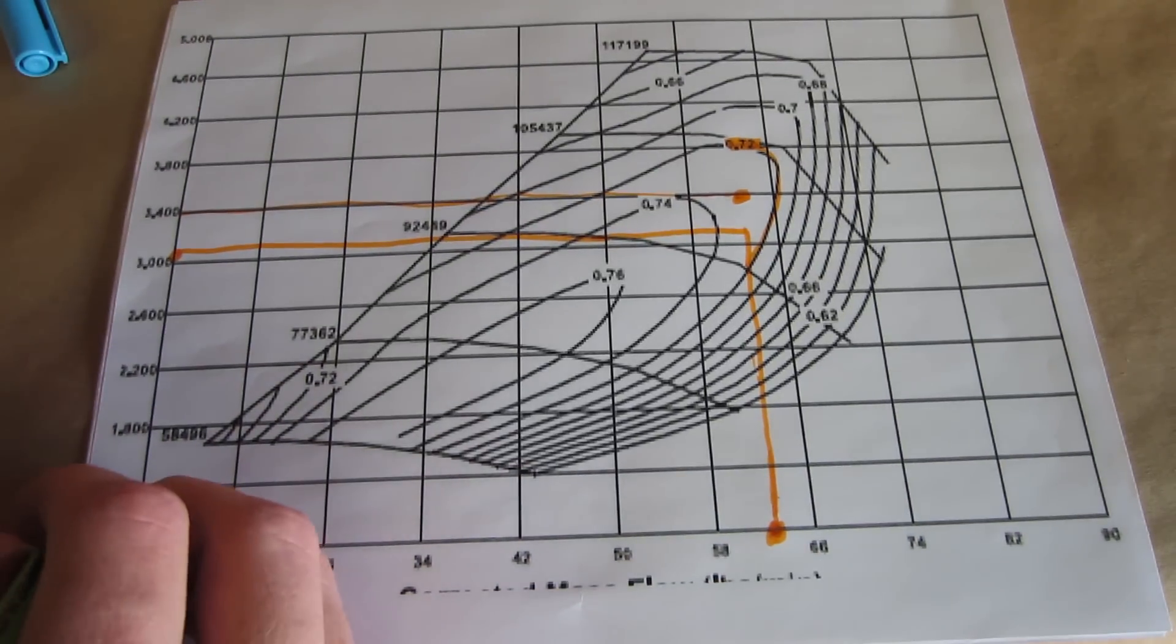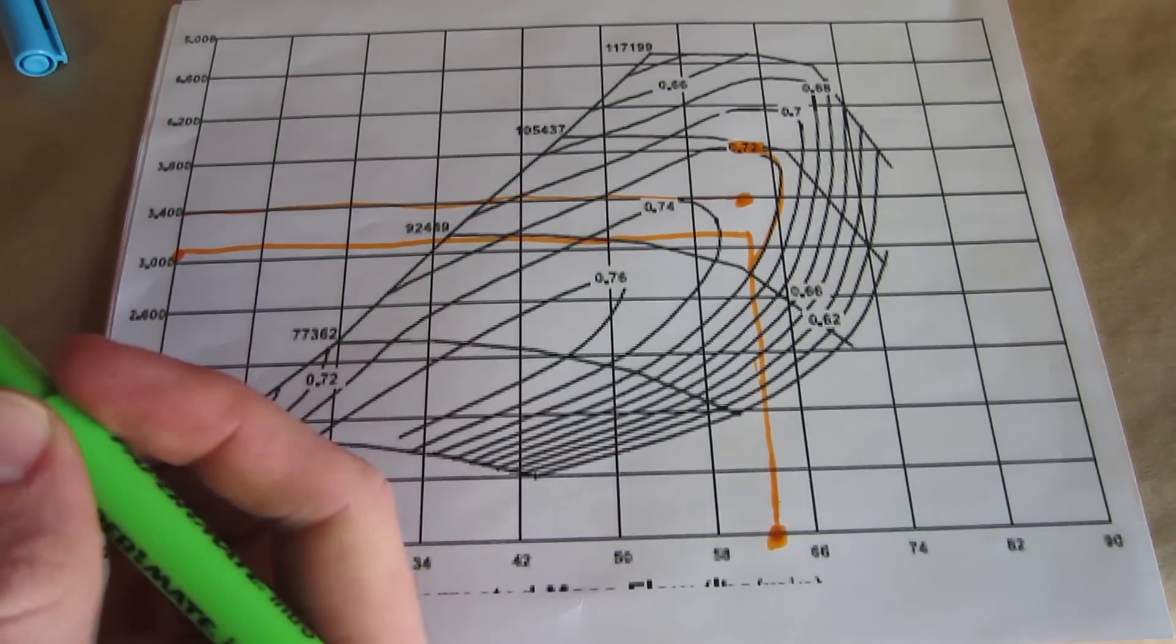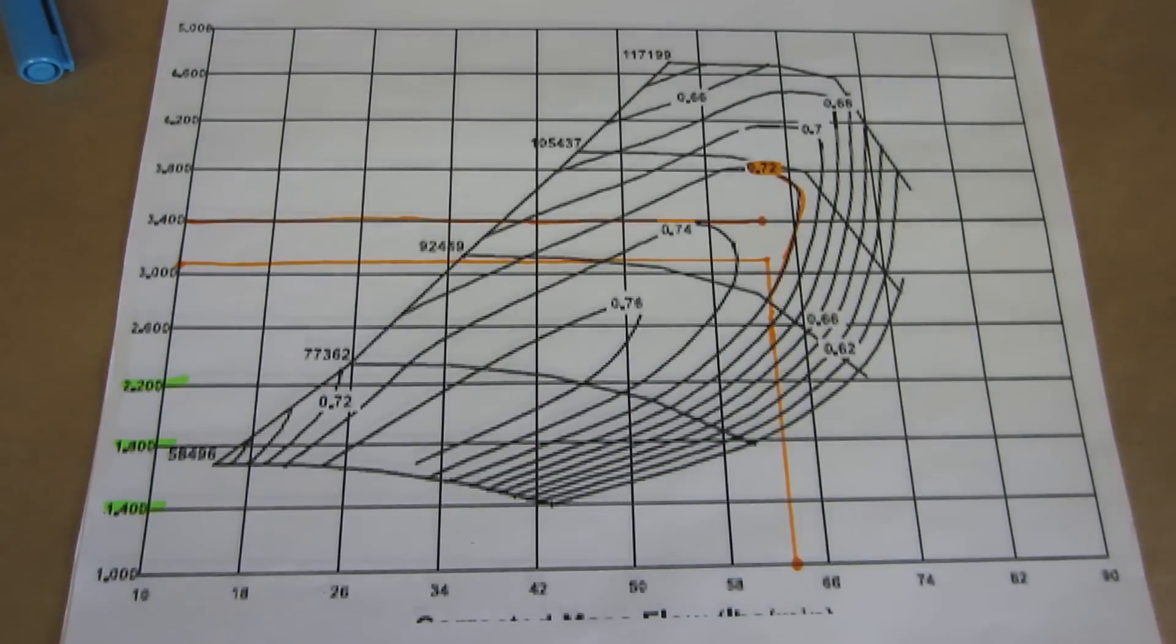This method assumes a lot and the biggest thing is that you do not know what your motor will actually flow. For instance, your actual motor may take a higher pressure ratio to flow the needed 62.5 pounds minute of airflow making the compressor less efficient because it may have to move up to another island.